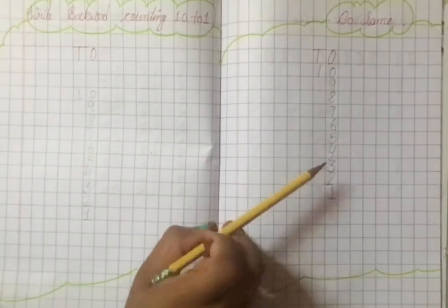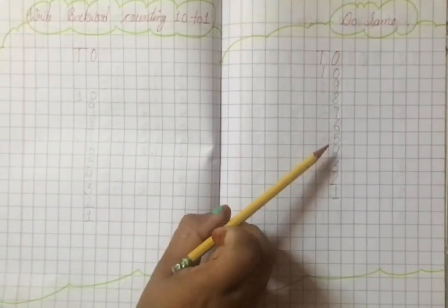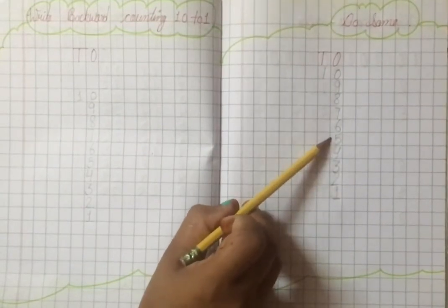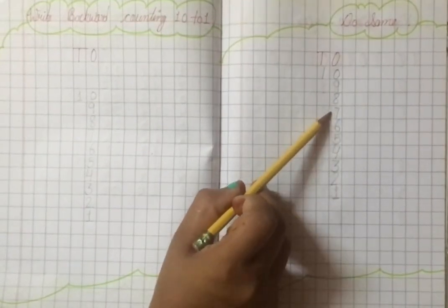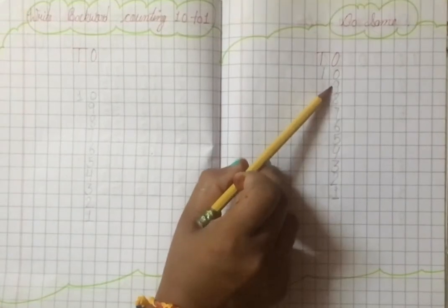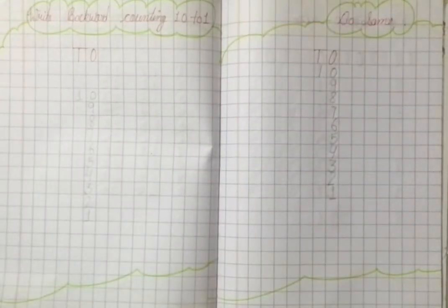Repeat again. 1, 2, 3, 4, 5, 6, 7, 8, 9, 10. Ok straight?